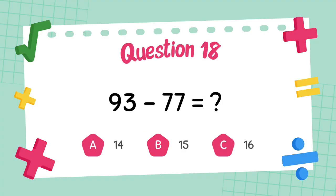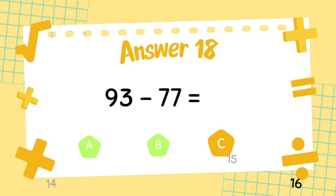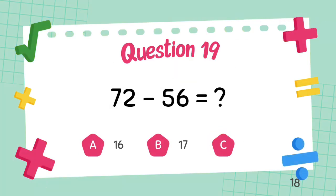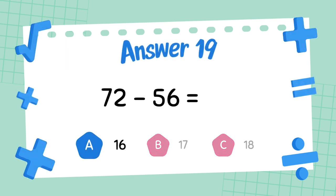What is 93 minus 77? The answer is 16. What is 72 minus 56? The answer is 16.